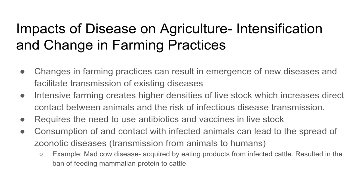The next impact is the intensification and change in farming practices. Changes in farming practices can result in the emergence of new diseases and facilitate the transmission of existing diseases. Intensive farming creates high densities of livestock, and when livestock are in high densities within an area, it increases the direct contact between animals and therefore increases the risk of infectious disease transmission.